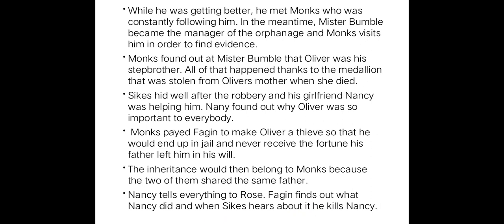After the robbery incident, Sikes had hidden himself from the outside world, and his girlfriend Nancy helped him. Nancy had found out the reason why Oliver was so important to all the other characters. It was only Monks who had asked Fagin to make Oliver into a criminal.